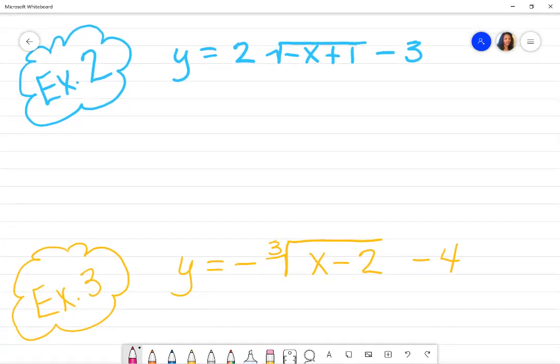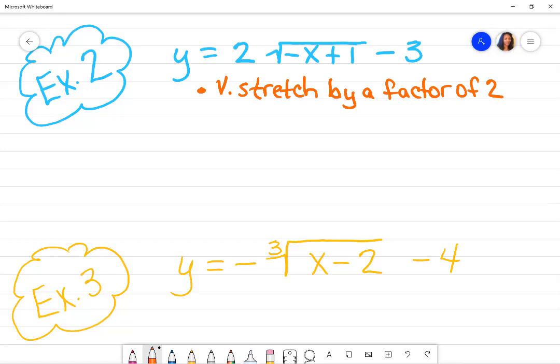For example two, we're going to do the exact same thing. We're going to just go step by step. If you have your notes, just refer to, just go in order. So number two is a vertical stretch, and this time it's a stretch because it's bigger than one, by a factor of two, because that's the number that's shown.